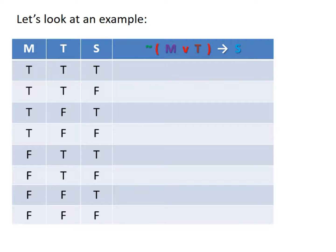That means you will have two times where M is false and T is true, and two times where M is false and T is false. To distinguish between those two times within each pair, we put in the S column where we simply alternate true and false all the way down: true, false, true, false, true, false, true, false. In this way, we can very quickly confirm that we have covered all of the possible combinations.